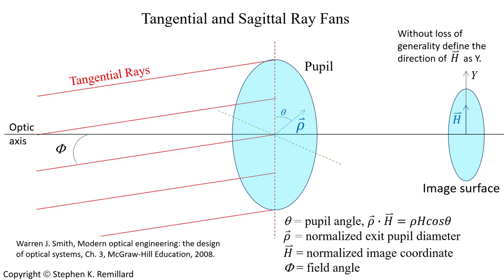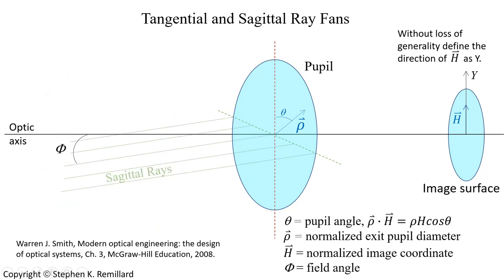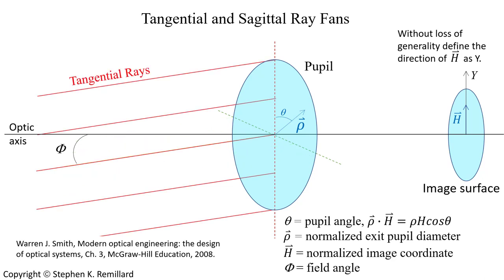Coma has a different effect on sagittal and tangential rays. Tangential rays approach along a vertical axis, while sagittal rays approach along a horizontal axis, and both are present as the whole pupil is peppered with ray pierces. Rho is the radial coordinate inside the pupil of magnitude rho and direction theta. H is the coordinate in the image surface; due to azimuthal symmetry the image can be oriented along the y-axis, so theta is effectively the angle between the pupil pierce vector and the image pierce vector.